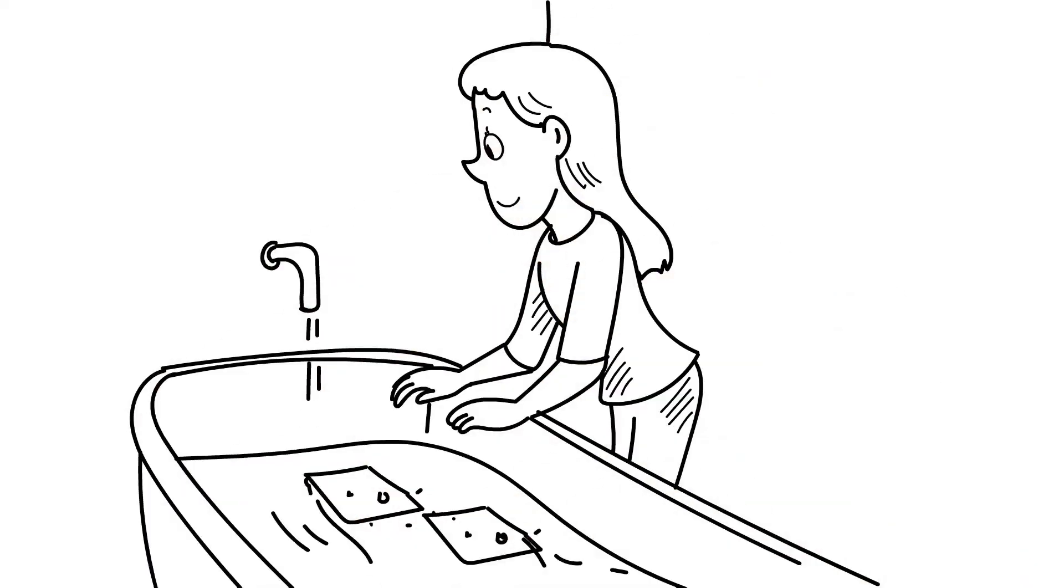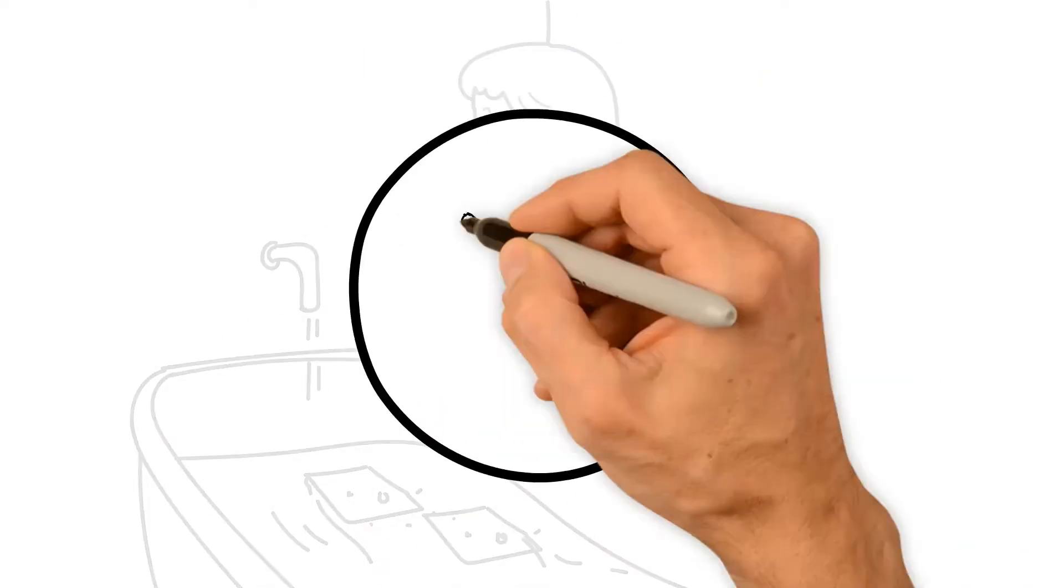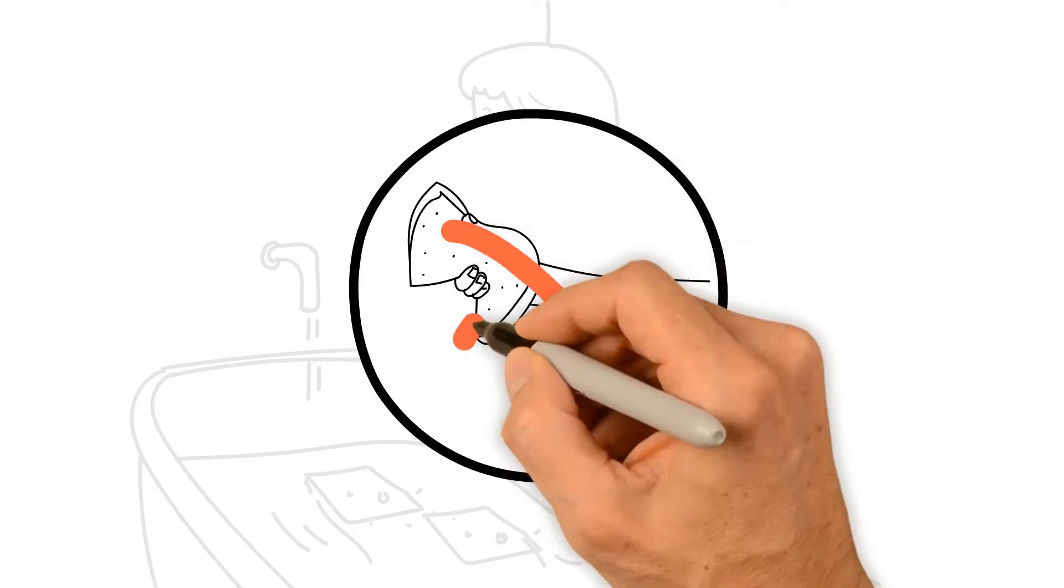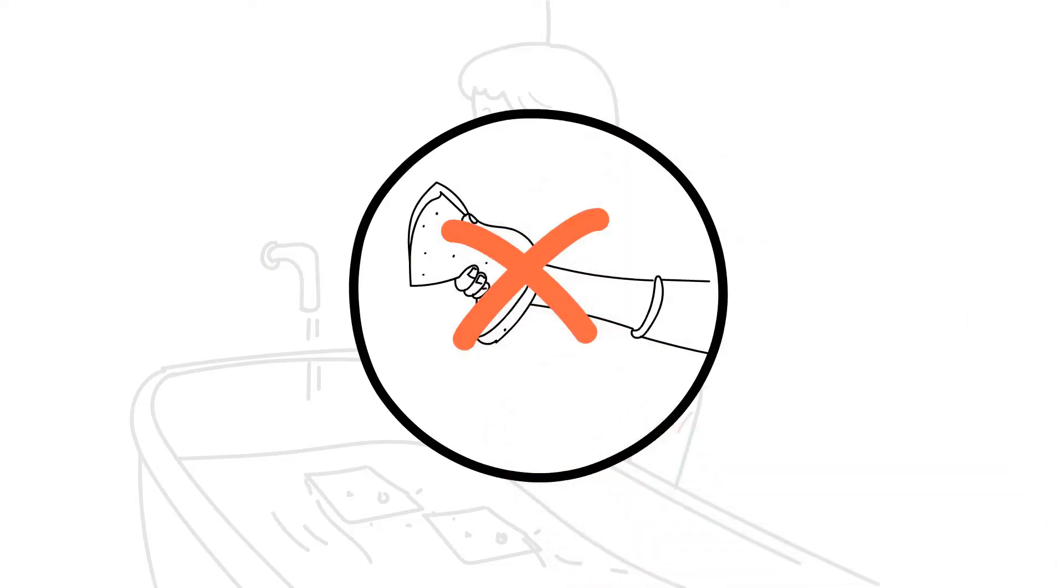Soak the sponge pad sleeves in tap water, but don't wring them out. The wetter, the better, as this helps ensure the current flow.